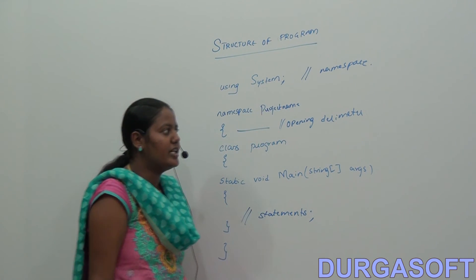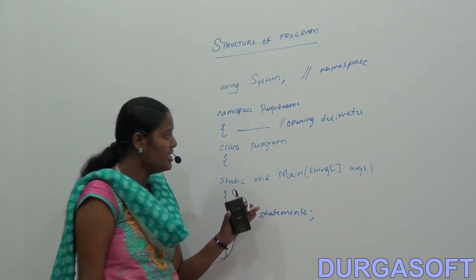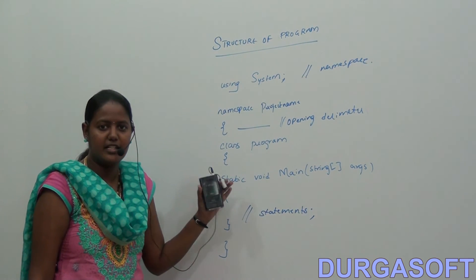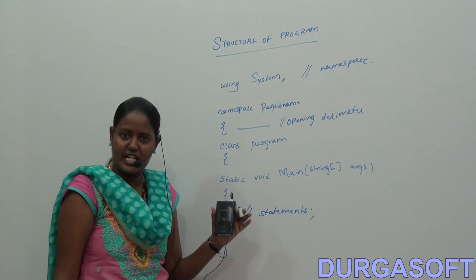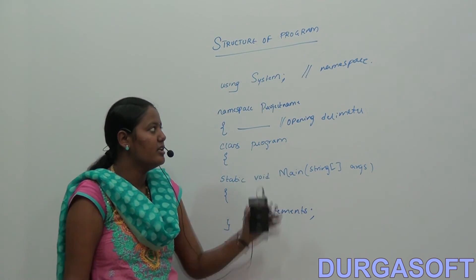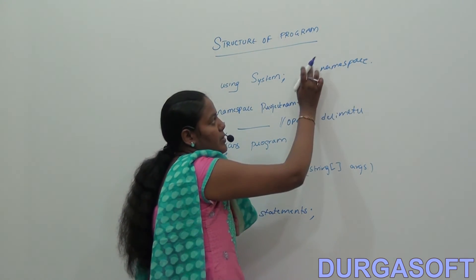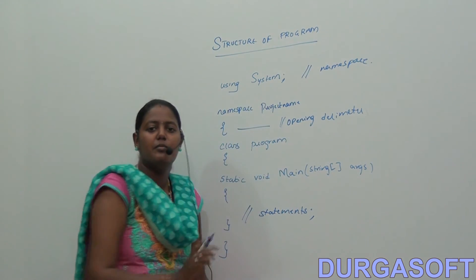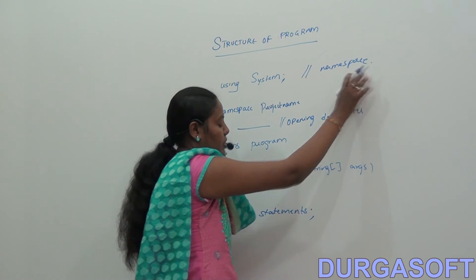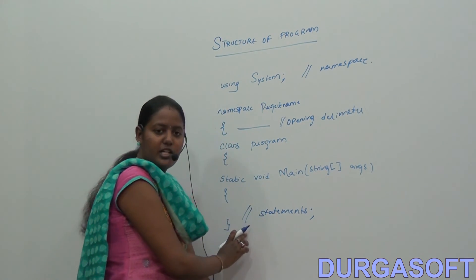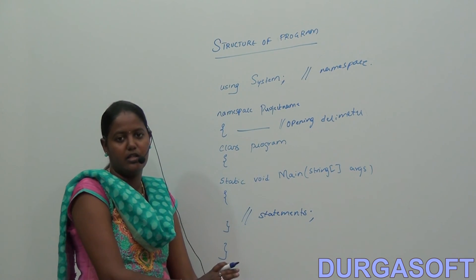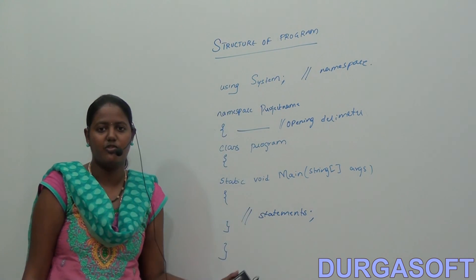This is the structure of a program. This program consists of namespace and class, and inside the class you are going to have the statements — you will be declaring the variables. If you put something in double quotes, this is called comments — the namespace will not be executed. If you write anything and put it in double quotes, this is single-line comments — it will not execute.